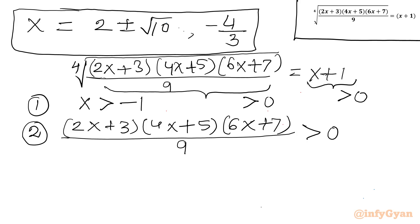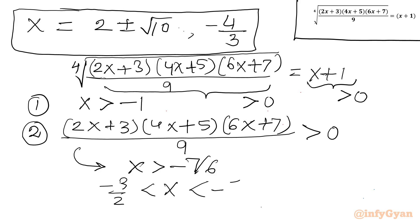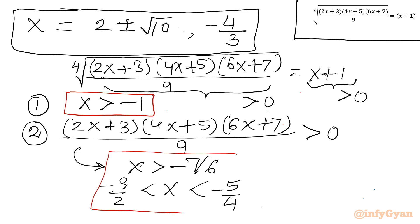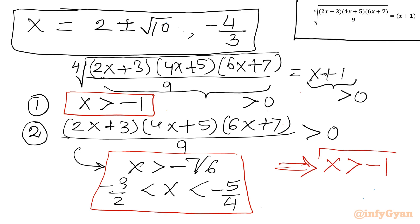Taking the intersection of all three conditions, the overall conclusion is x > −1. So we will only accept solutions greater than −1. Now we check: 2+√10 ≈ 5.16 (greater than −1, accepted). 2−√10 ≈ −1.16 (less than −1, rejected). −4/3 ≈ −1.33 (less than −1, rejected).